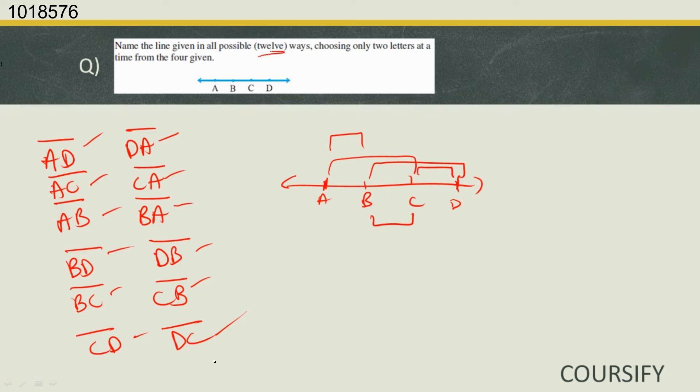12 ways of choosing as given in the question. So these are the 12 ways of naming a line segment.